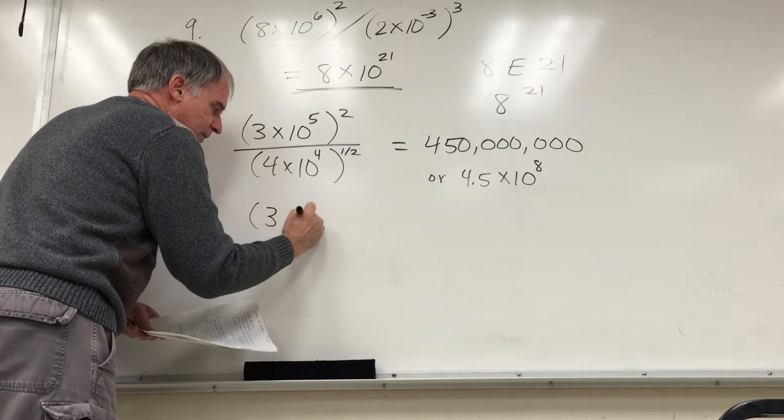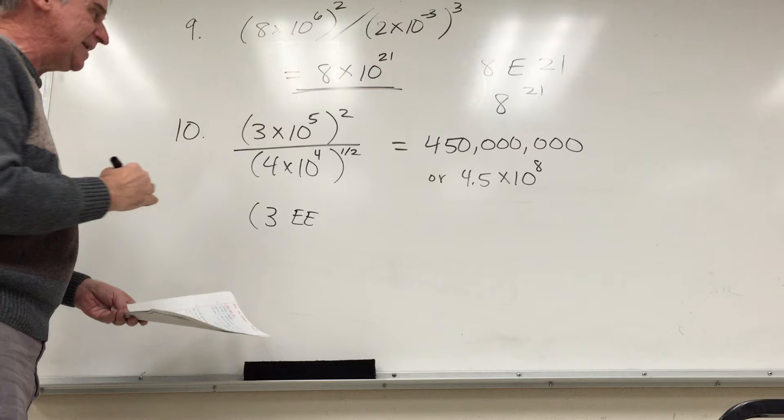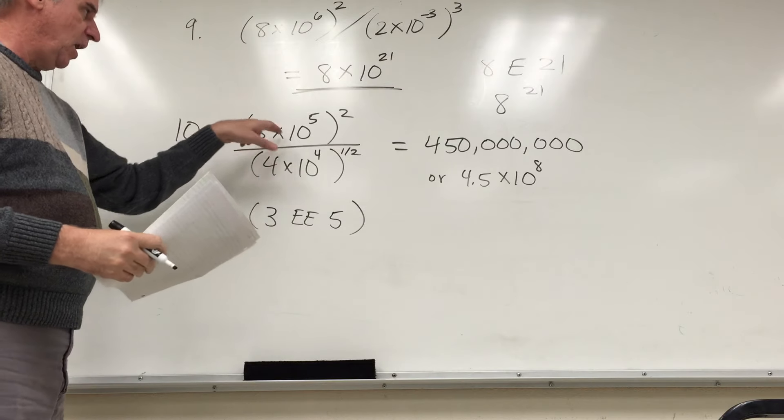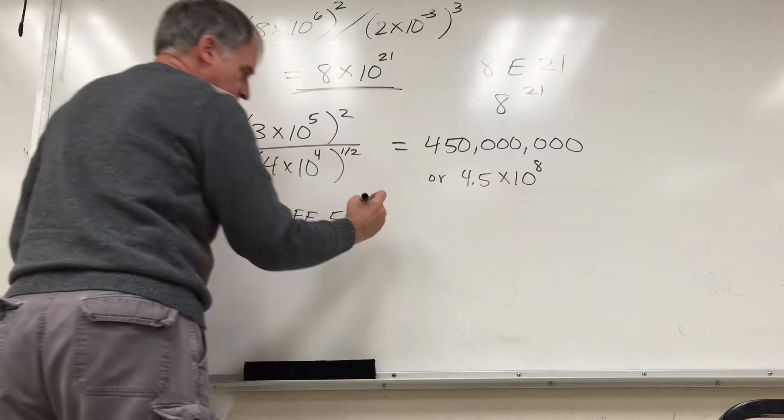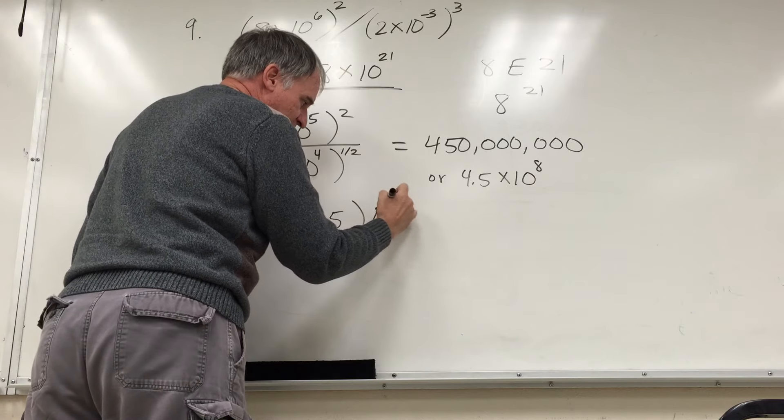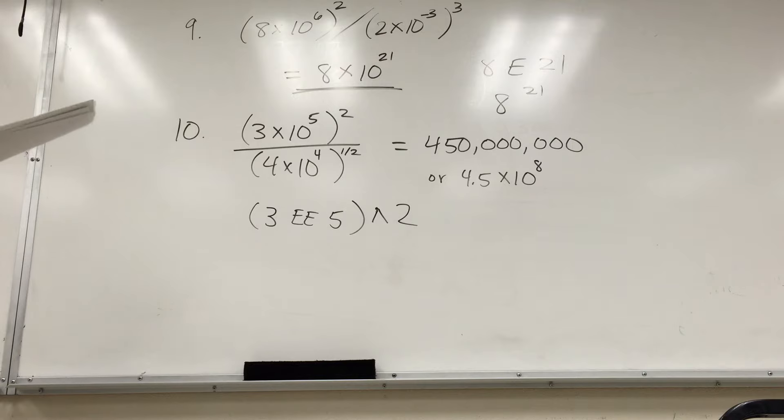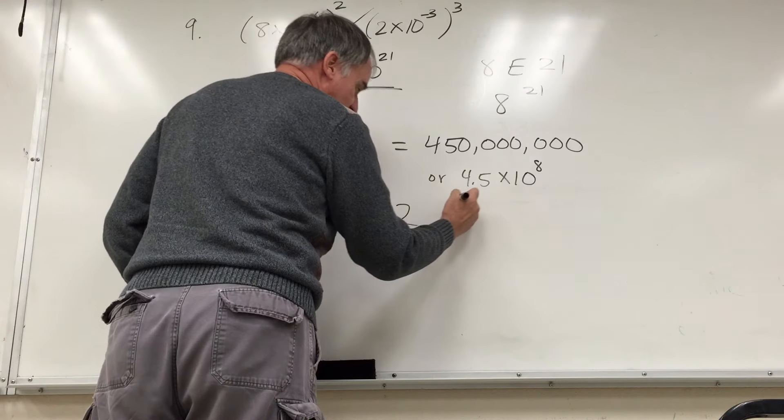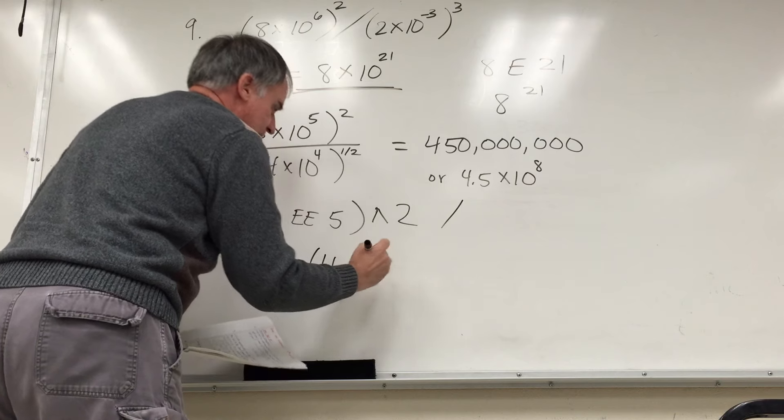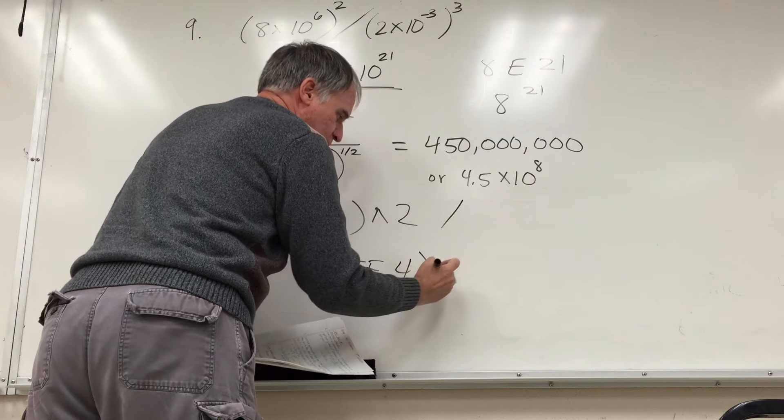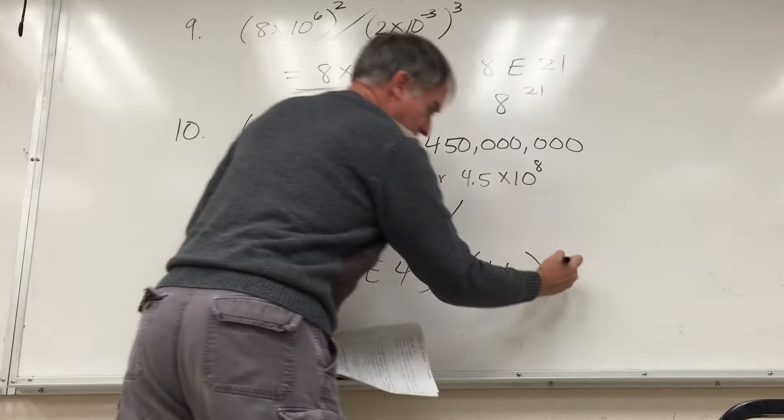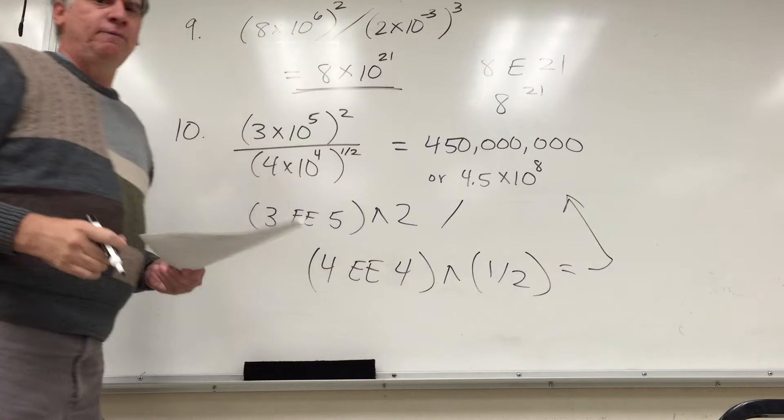Parenthese button, 3. Then your scientific notation button, often an EE button, and then 5, close parentheses, that means 3 times 10 to the 5th power, and then the power button, sometimes that's Y to the X button, or the little caret button, squared, second power, then divided by, and then parentheses, 4, E, E, 4, close parentheses, power to the 1 divided by 2 power, close parentheses, then the equal button, and that should give you this answer there.